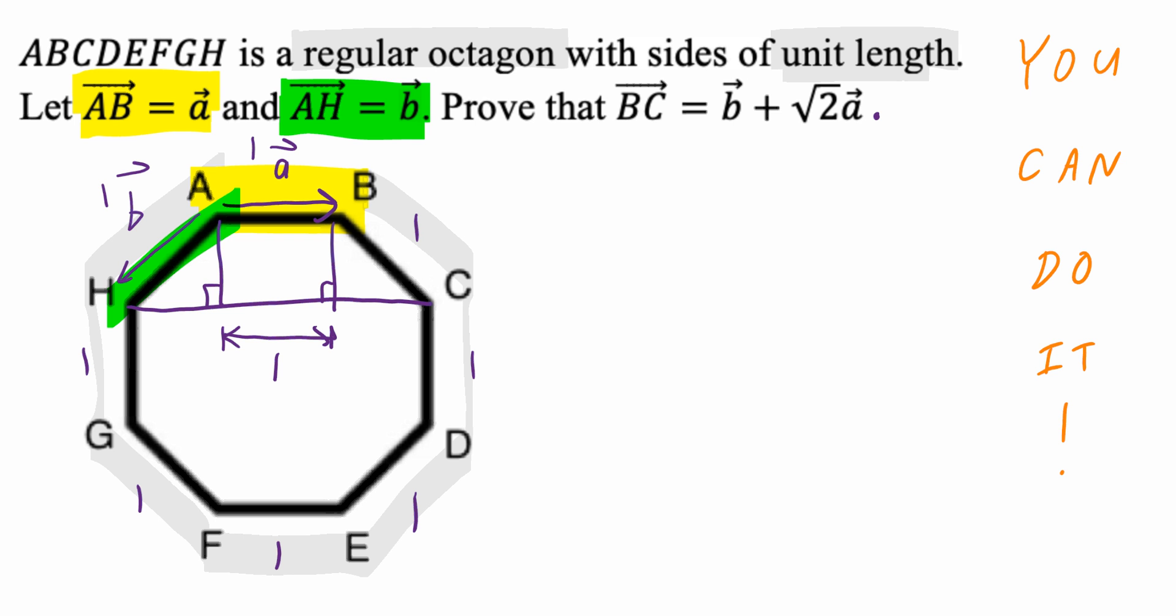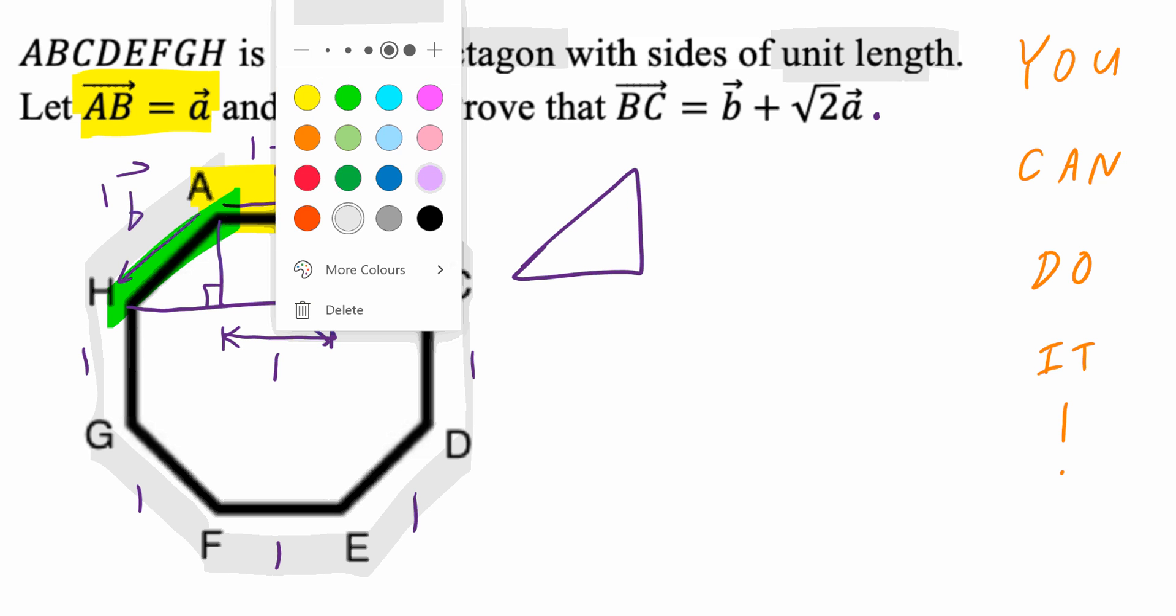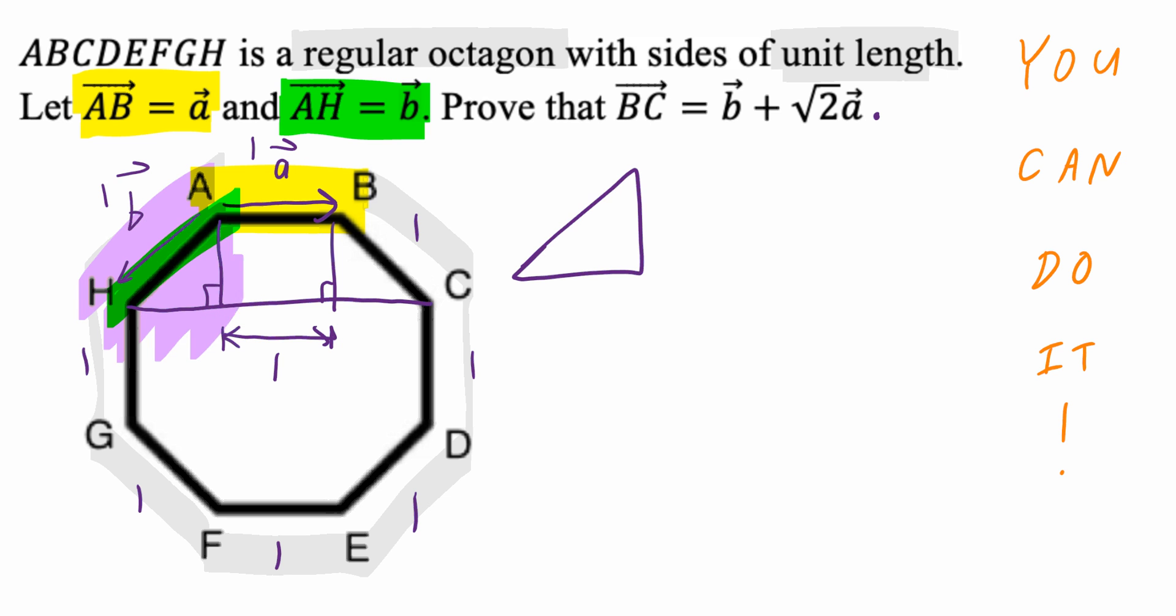Now, if you zoom in to one of these triangles, so for example, if you think about this triangle right here. This hypotenuse has a length of 1. Because it's a regular octagon, this angle is going to be 45 degrees.